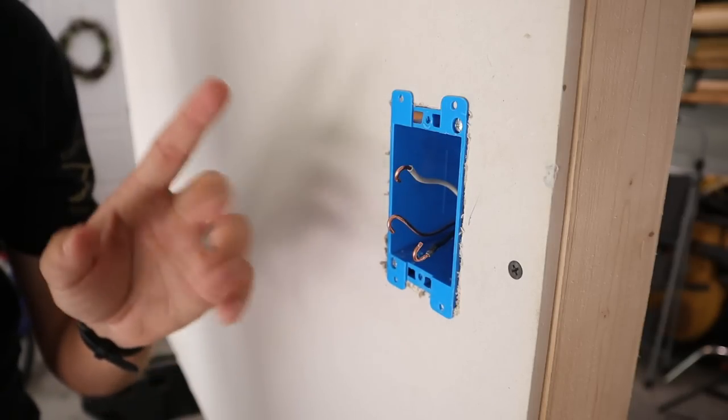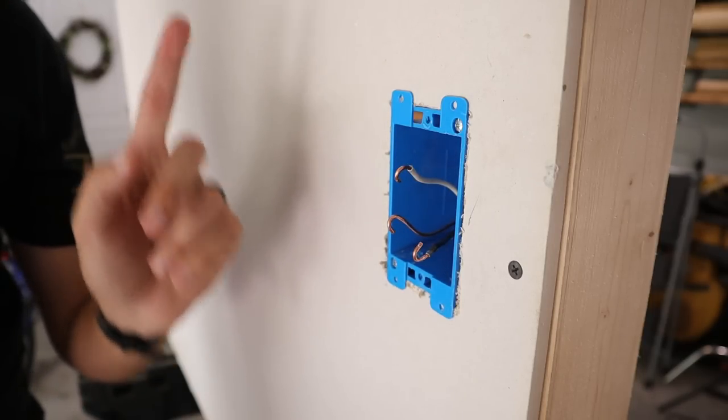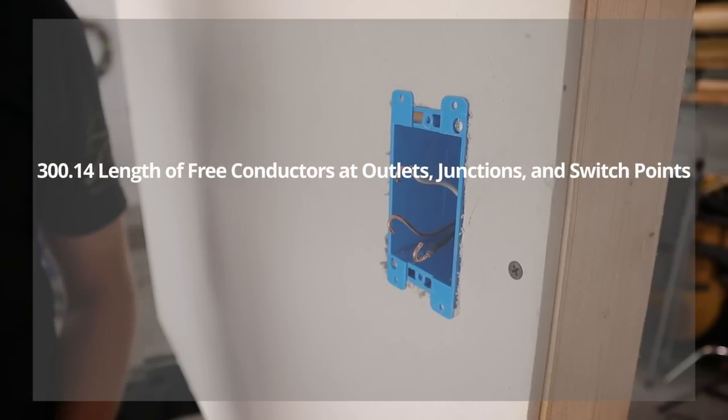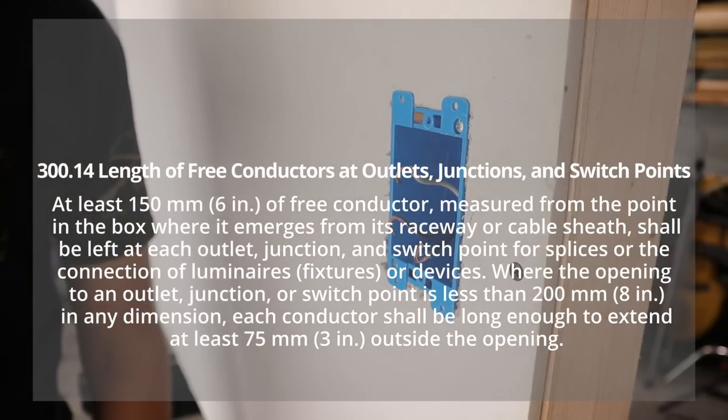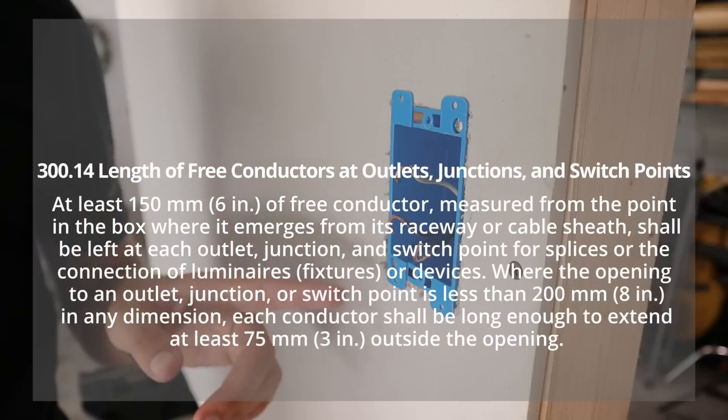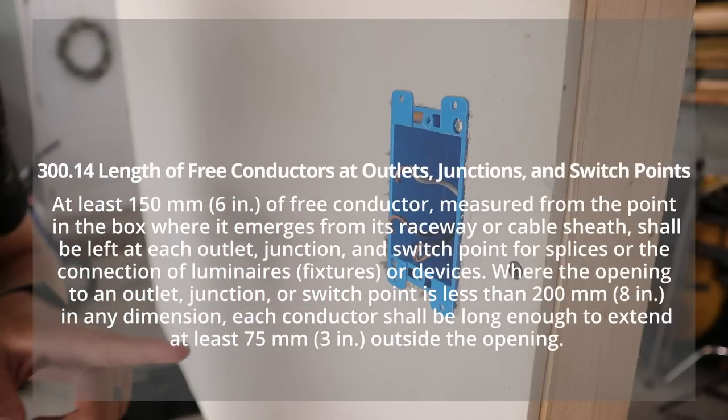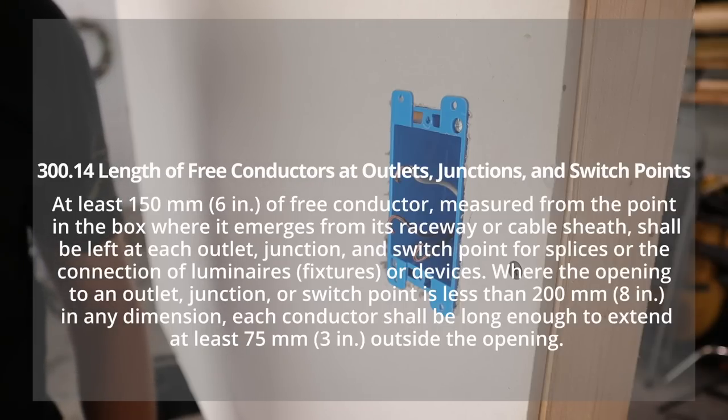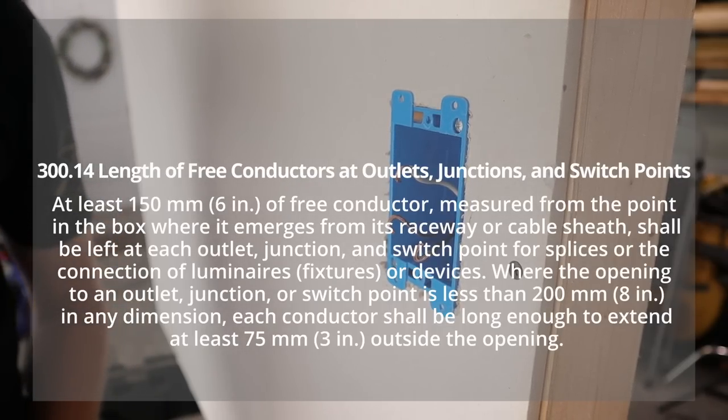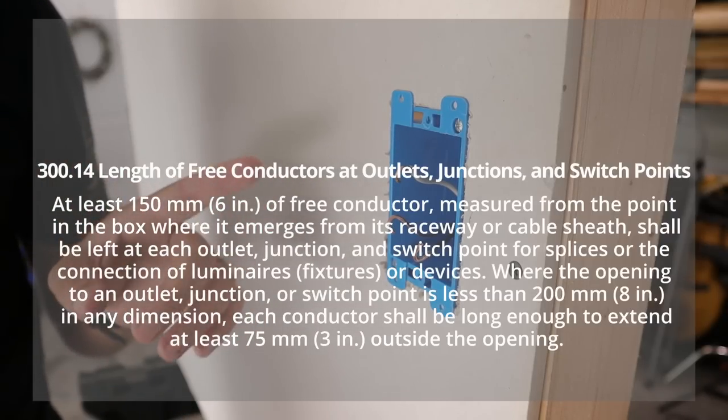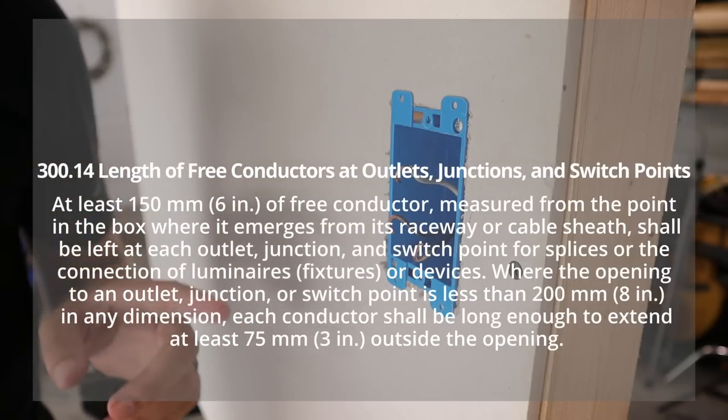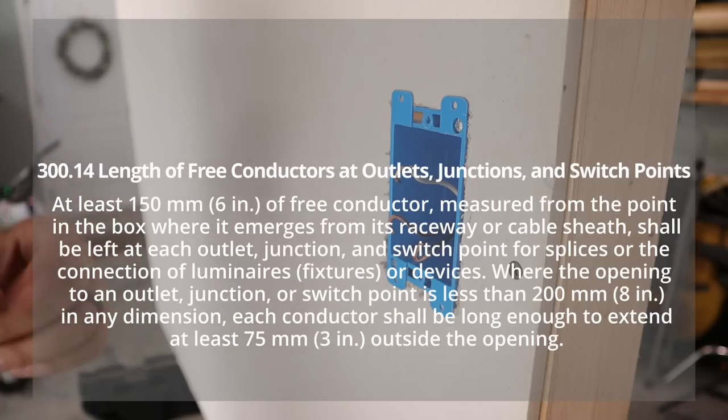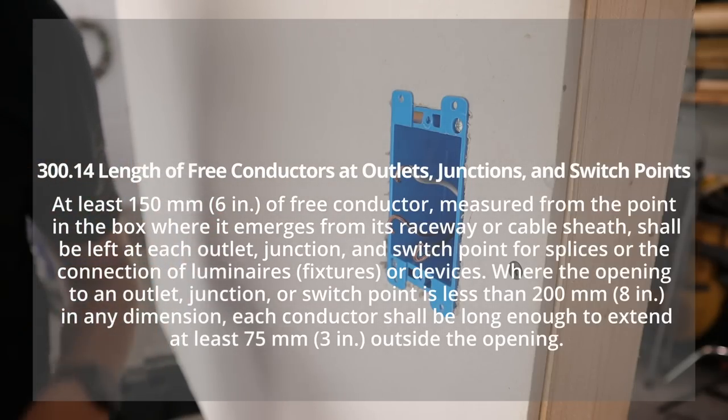Before I show you how to go about fixing this, let's take a look at code just to see what should have been here. According to the NEC 300.14, which is titled length of free conductors at outlets, junctions, and switch points, it states that at least 150 millimeters or six inches of free conductor measured from the point in the box where it emerges from its raceway or cable sheath shall be left at each outlet. Where the opening to an outlet is less than 200 millimeters or eight inches in any dimension, each conductor shall be long enough to extend at least 75 millimeters or three inches outside of the opening.